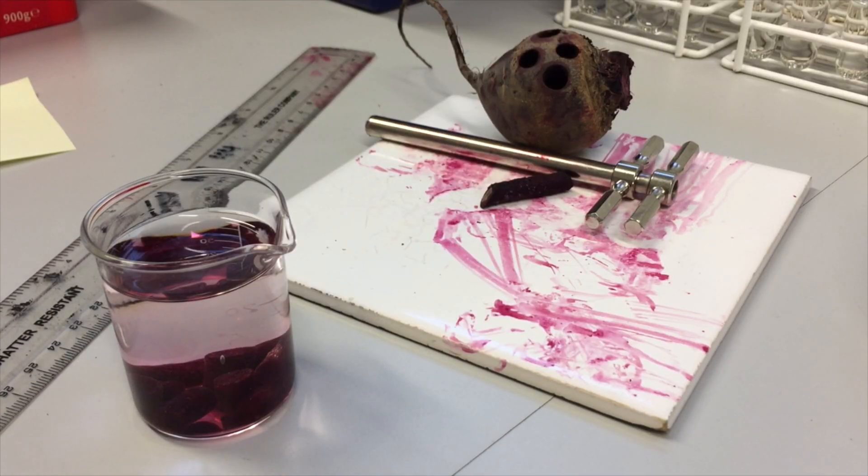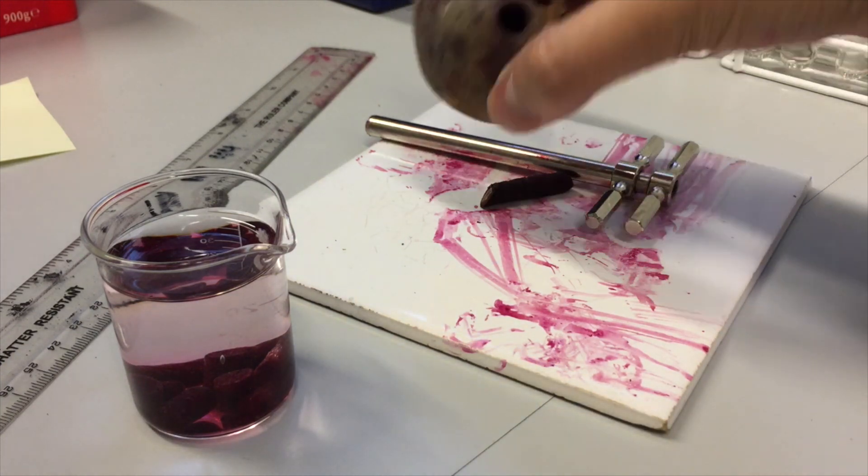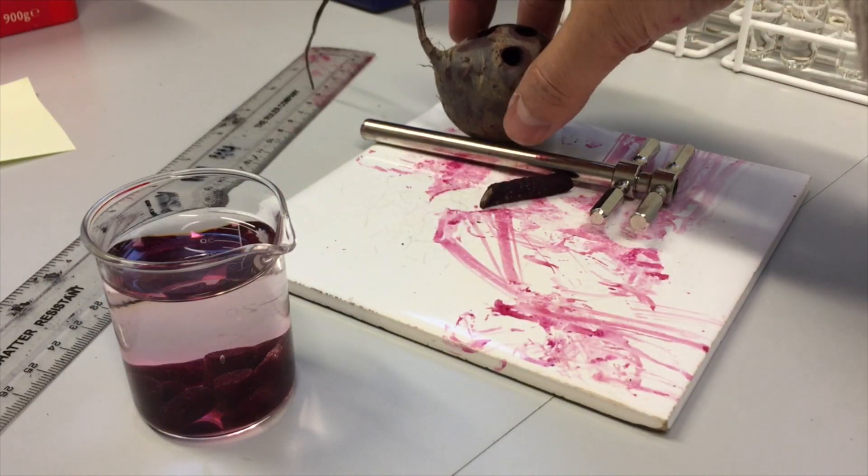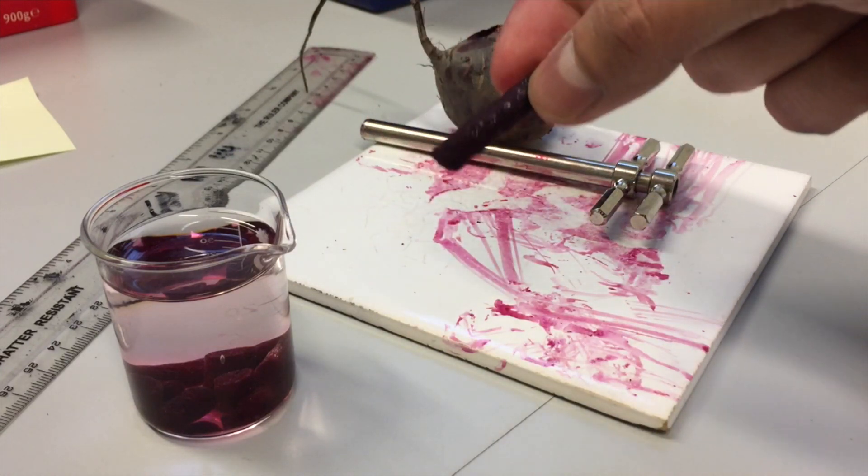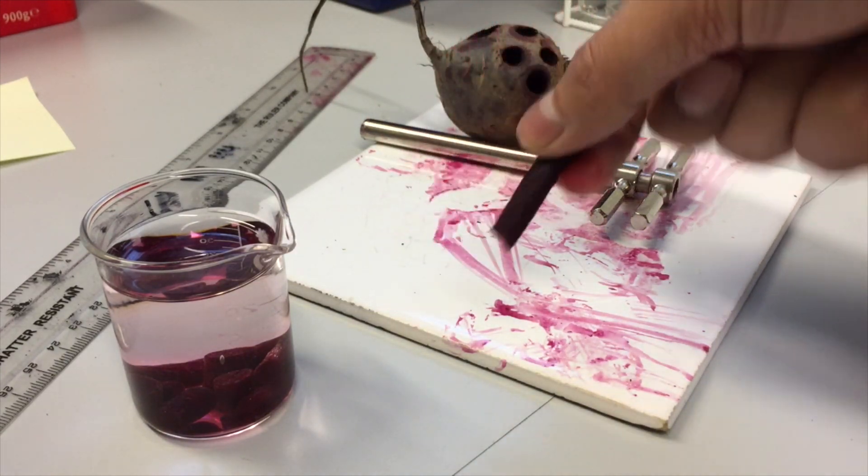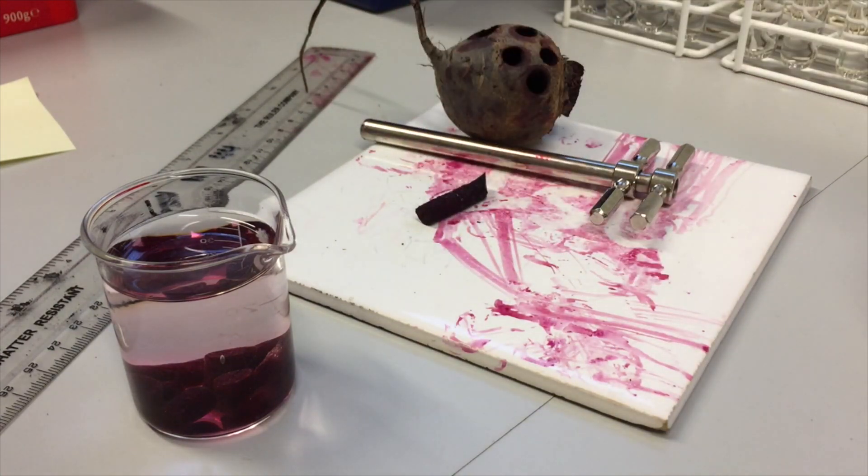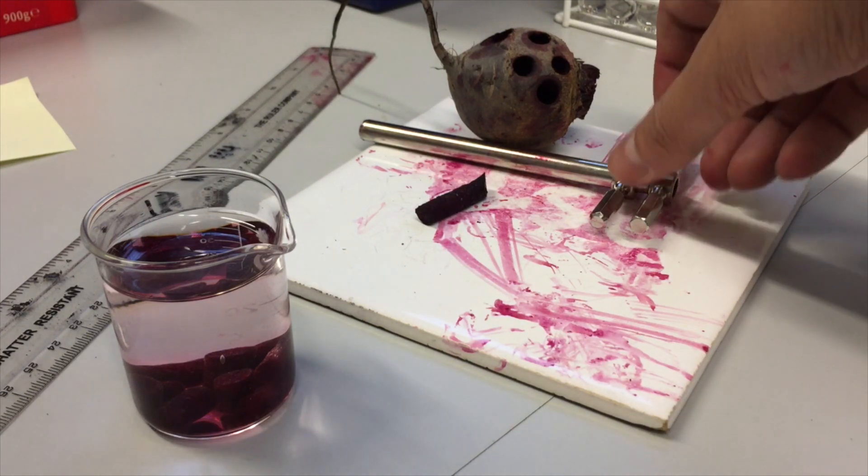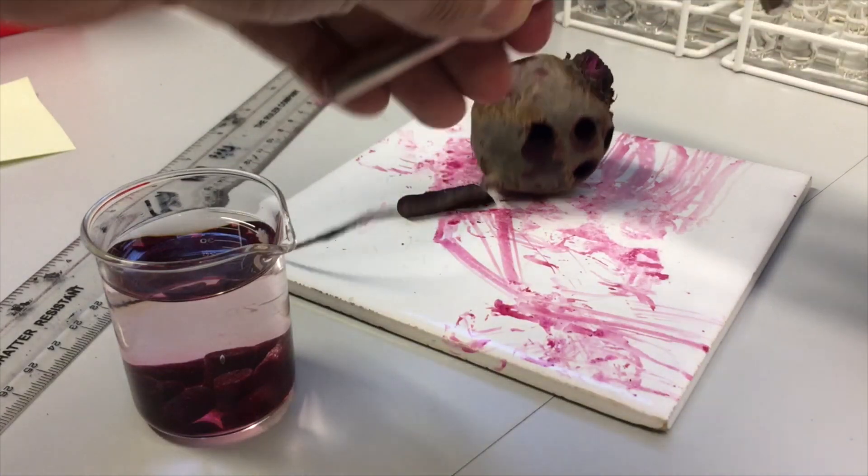So to continue the experiment, what we are going to do is look at that membrane integrity, and the readout of membrane integrity is going to be the release of a dye from cells. Now what we're going to use is cells from a vegetable, and the important thing about this vegetable is that it is highly colored. So we're going to use a beetroot.